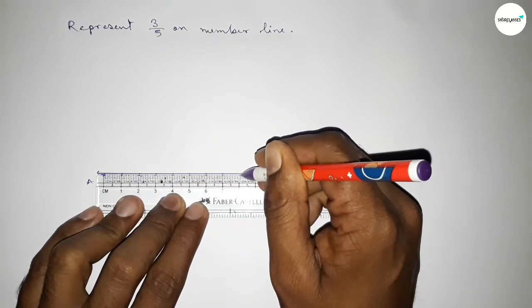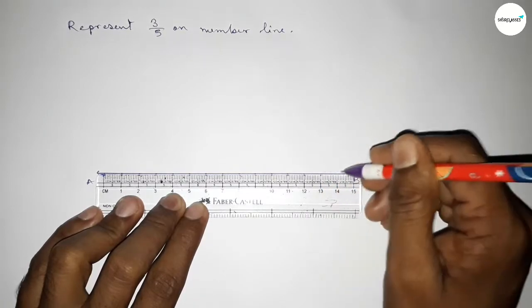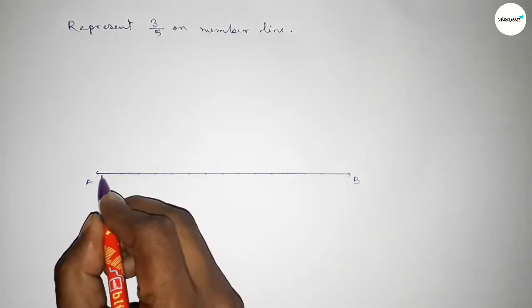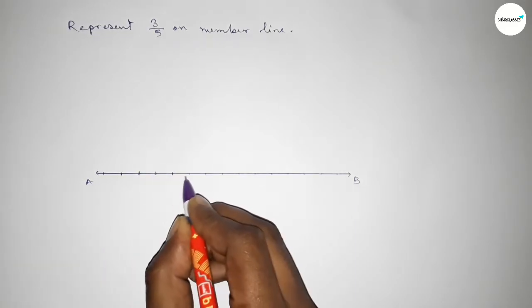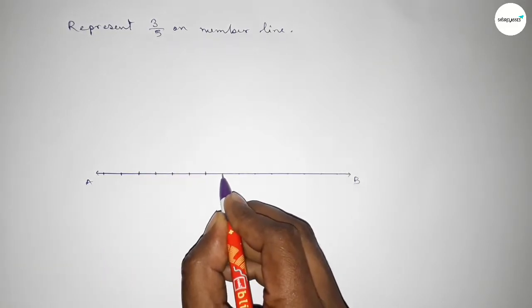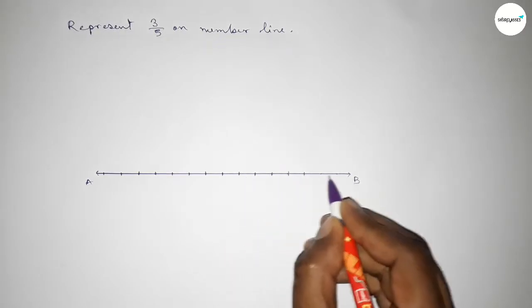Marking the numbers on the line to draw the number line. Marking the numbers with deep color to understand perfectly. So first we have to draw here the number line, then we can represent the number on the line.